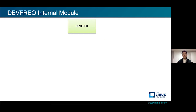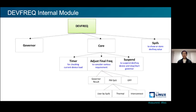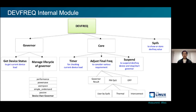First, let's check the device frequency internal modules. There are three main modules: core, governor, and sysfs. The core module contains three sub-modules. The timer is used for monitoring the device periodically to check the next frequency. The adjust final frequency sub-module decides the final frequency among multiple inputs like governor result, user input through sysfs, and interconnect. The core also supports the device frequency suspend module. The governor has two sub-modules: get device status, and manage the life cycle of the governor. The governor needs to get device status to decide the next frequency, which is then used by the governor algorithm.